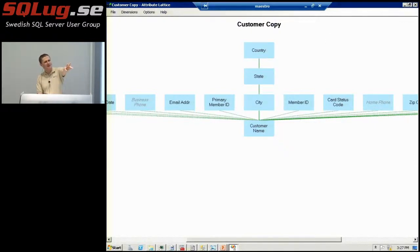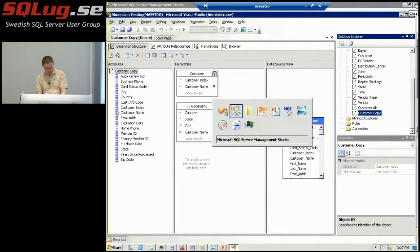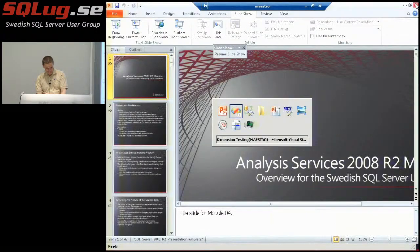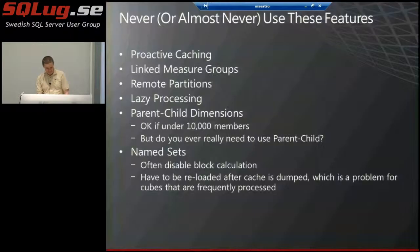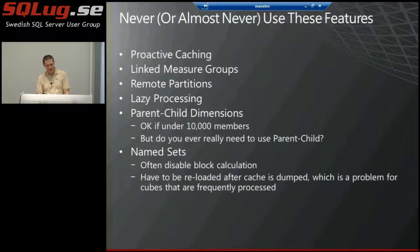That's one possible way to solve the attribute problem. Does that kind of make sense? Good. Okay, where were we? Let's see — larger cubes require simpler structures. We went over that.